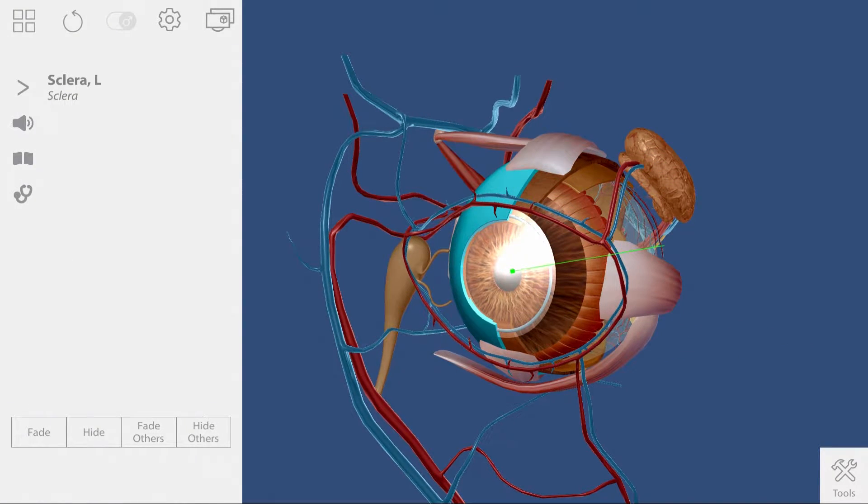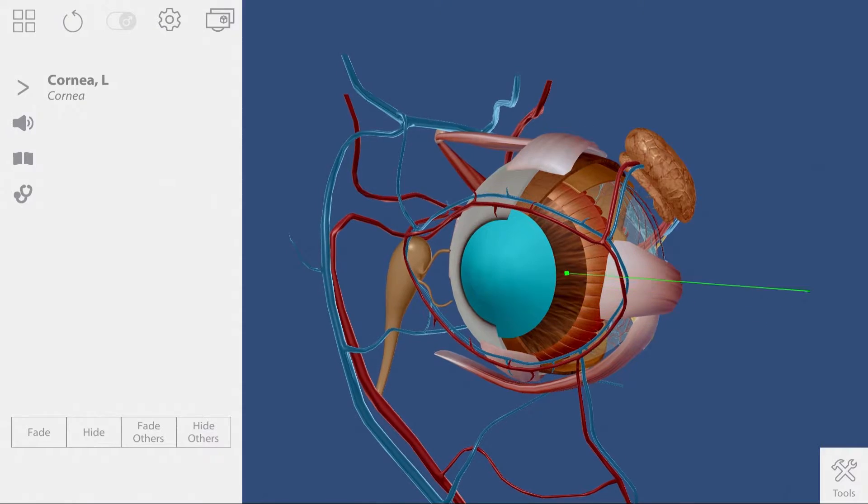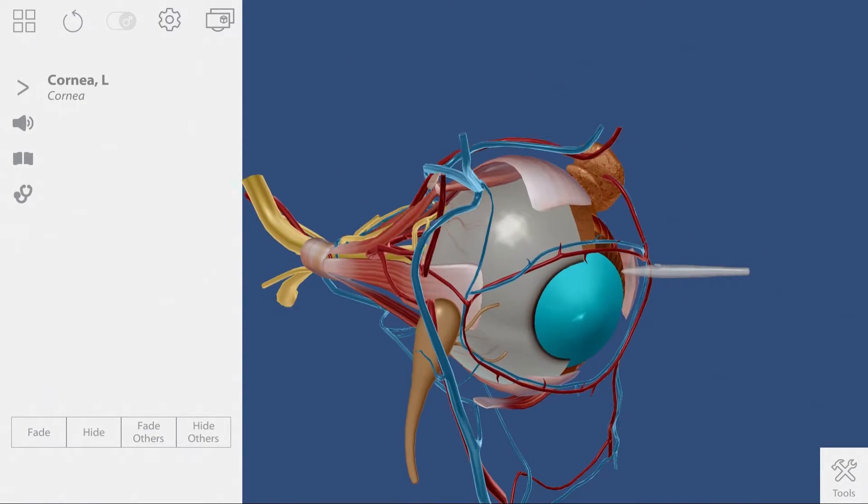Let's start with the sclera and cornea, which form the external layer, oftentimes referred to as the fibrous layer.